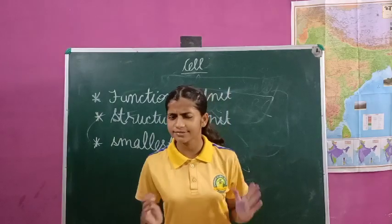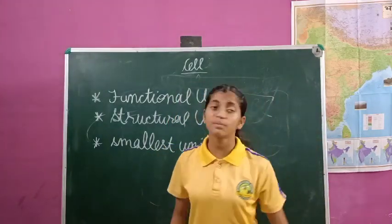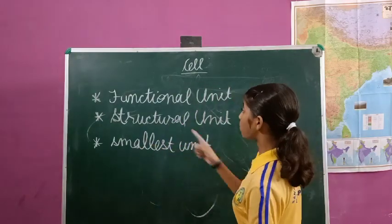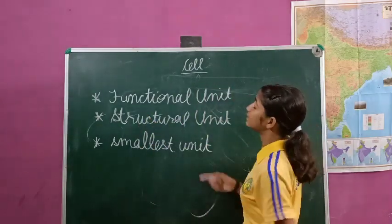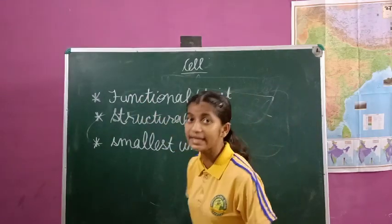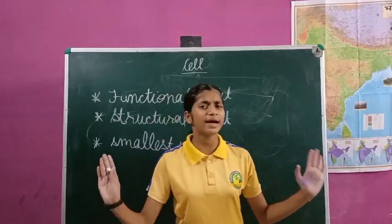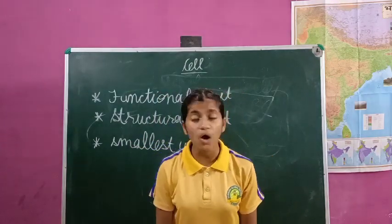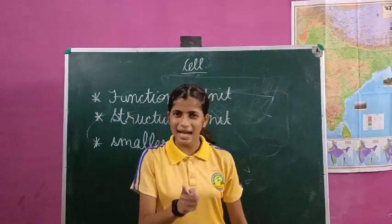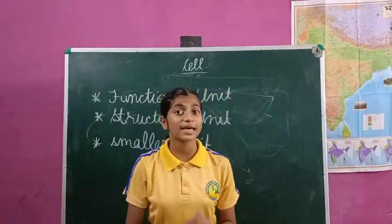If we note all these three points, here we can make a definition of cell: the smallest functional and structural unit of the body that helps us to perform various functions. So finally, I think we all understand what a cell is.